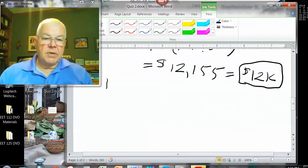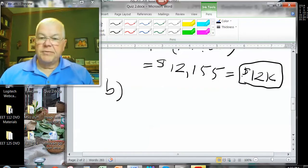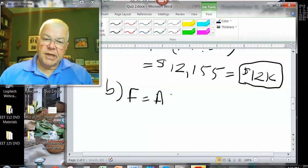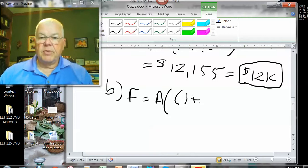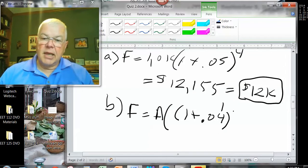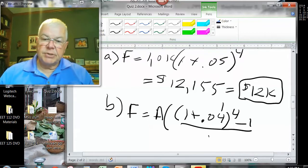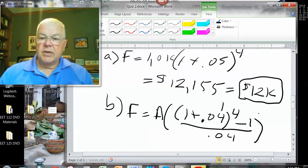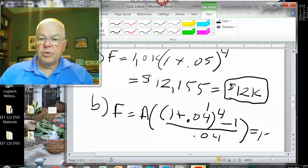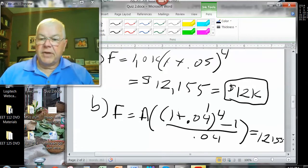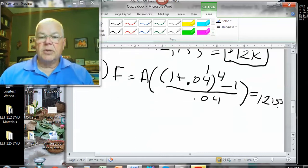Now the part B is, how much should they be saving each year? Well, this is the future value that we have to have, and so the future value equals how much they have to put aside each year, times the quantity 1 plus the interest rate. Well, they're making 4%, not 5%, so it's 0.04, and they're going to be doing it for four years, so minus 1 divided by the interest rate, which is 0.04, that has to equal this $12k. Actually, to get the right answer, we should really do the 12,155.